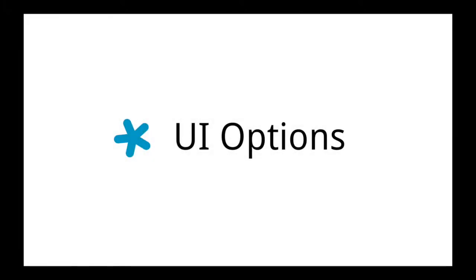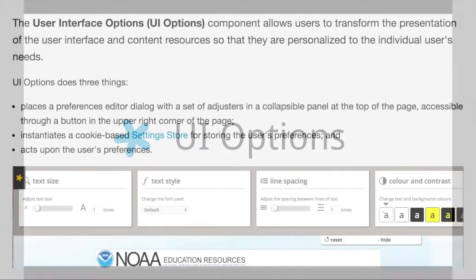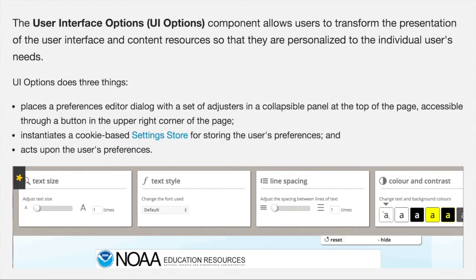This video provides an introduction to the Fluid Project's User Interface Options, also referred to as UI Options. It then demonstrates the process of integrating UI Options with a website. UI Options is a tool that allows individuals to personalize web content and other user digital interfaces to meet their needs and preferences. It works by adding to the existing styles of a website or application and can be integrated into a design with relatively minimal effort.